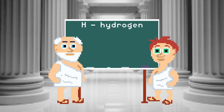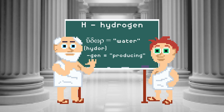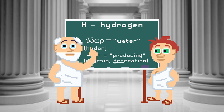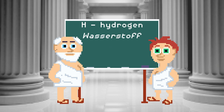Hydrogen — Greek. Hudor means water, and the -gen suffix you see on a lot of the elements means producing, like in Genesis or generation. Hydrogen is called water-producing because when you expose it to oxygen, you get water. Bonus fact: the German word for hydrogen is Wasserstoff, literally water stuff.